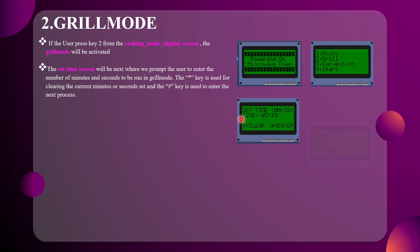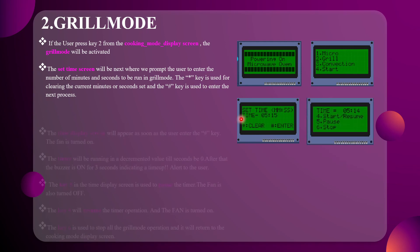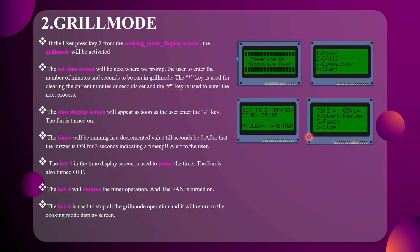The user is prompted to enter the number of minutes and seconds for the Grill mode. If we press hash, the time display screen appears and the timer decrements to zero. Once it is over, a time-up alert is given by turning on the buzzer for 3 seconds, then it returns to the cooking mode display screen. Key 5 pauses the timer, key 4 resumes the paused operation, and key 6 stops the current operation and returns to the cooking mode display screen.